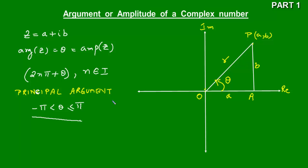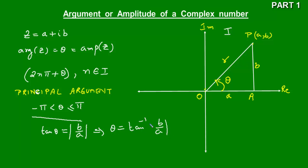Now we have a complex number which lies in the first quadrant. In this case the argument is theta. To find theta, we know the opposite side and the adjacent side, therefore we can find tan(theta). So tan(theta) equals b upon a, and since theta is acute it will always be positive.